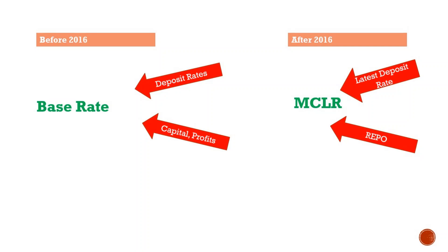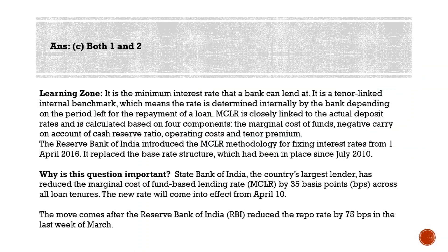Apart from the repo rate, banks must now consider the most recent deposit rate. When a bank provides a loan to a new customer, it must set the lending rate based on the prevailing repo rate and the recent deposit rate. Earlier, banks used to set rates based on the average deposit rate; now they must use the latest deposit rate. That is the key difference. MCLR is more transparent because everyone knows the latest deposit and repo rates and can calculate accordingly.